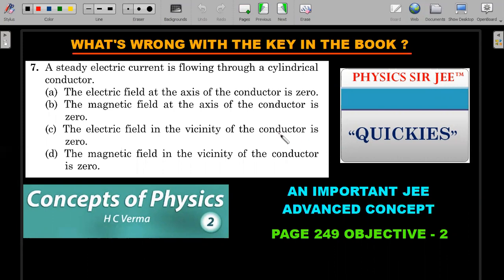All good. Let's try to go ahead with the problem statement. You want to give it a try? Pause the video, have a look in, and then move forward. We'll top the video with two practice questions on similar situations at the end of the video. A steady electric current is flowing through a cylindrical conductor. There are four options: electric field at the axis of the conductor is zero, the magnetic field at the axis of the conductor is zero, electric field in the vicinity of the conductor is zero, and the magnetic field in the vicinity of the conductor is zero. These are the four options. This is more than one correct type of question in Objective 2, so you're supposed to mark the appropriate answers.